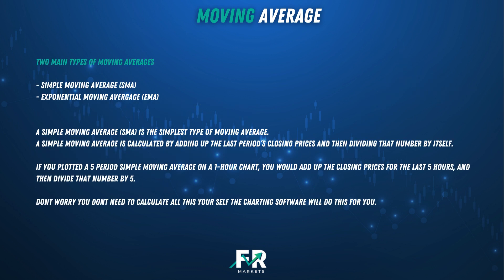There are two main types of moving averages: the simple moving average (SMA) and the exponential moving average (EMA). A simple moving average is the simplest type of moving average, calculated by adding up the last periods' closing prices and then dividing that number by the number of periods.